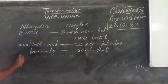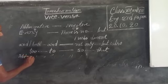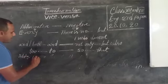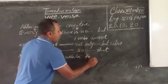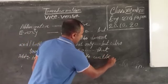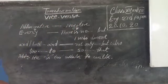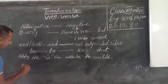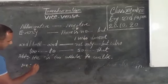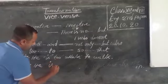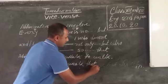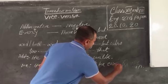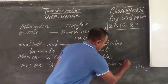Here is an example. Affirmative: 'It is too weak to walk.' Every time we know this sentence. That is true. Now make it negative: 'It is so weak that he cannot walk.'